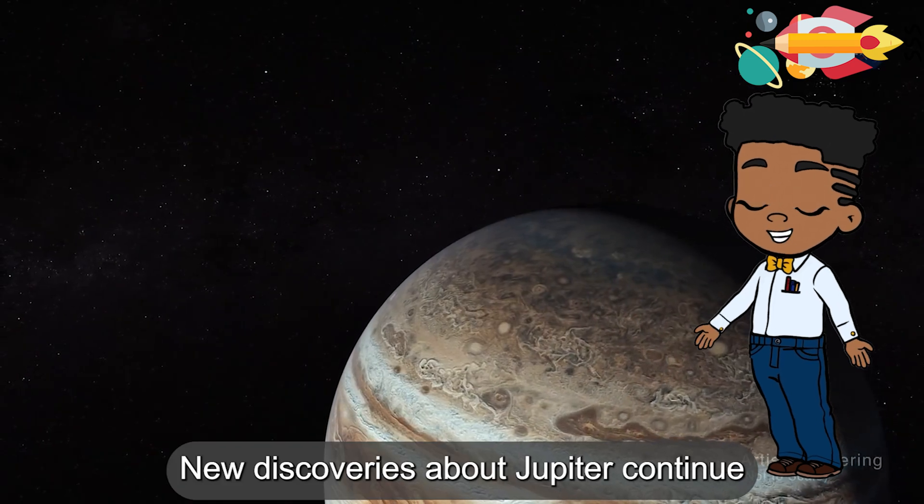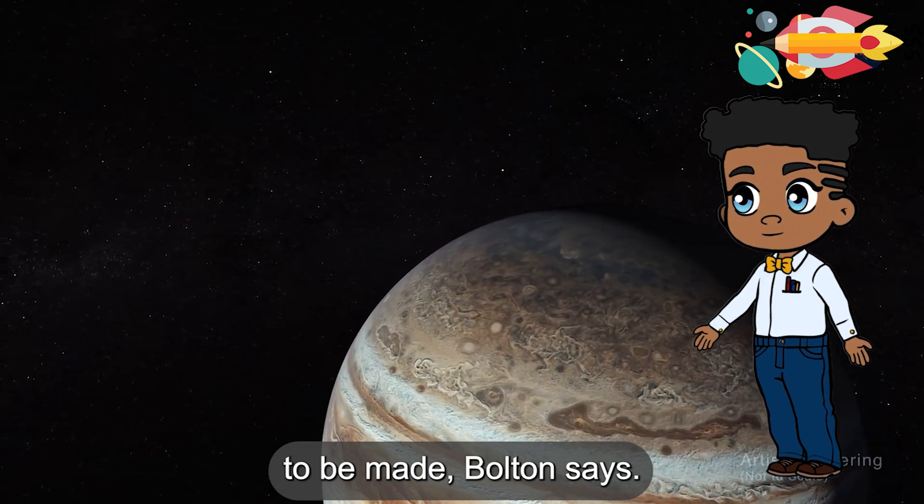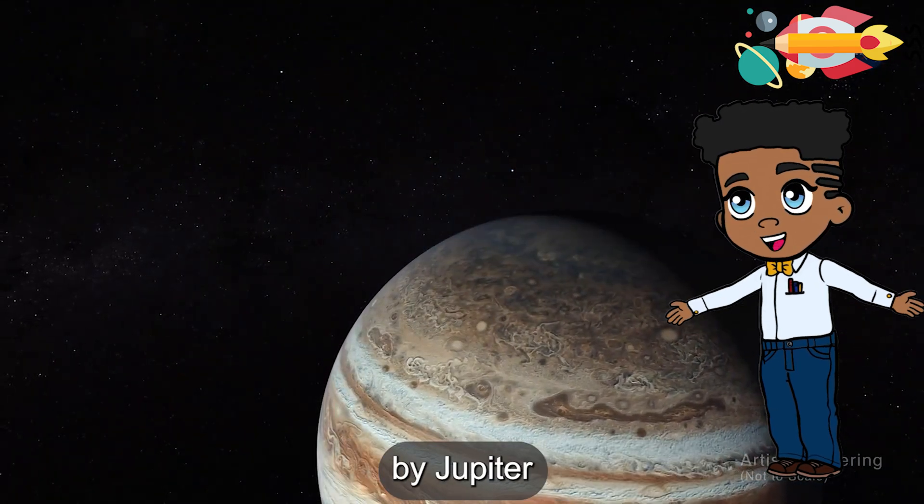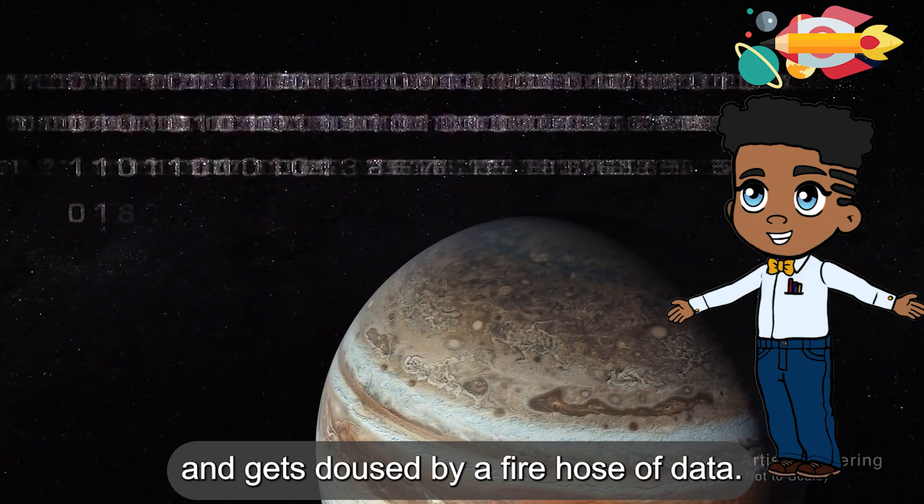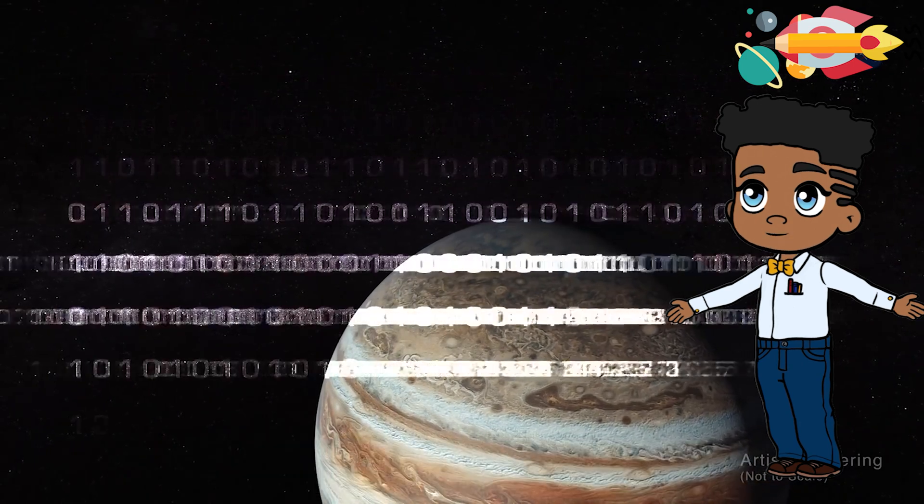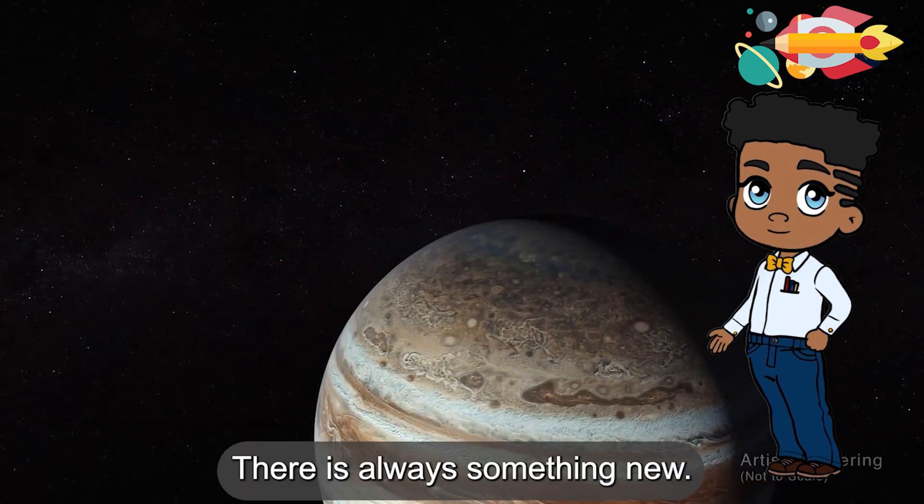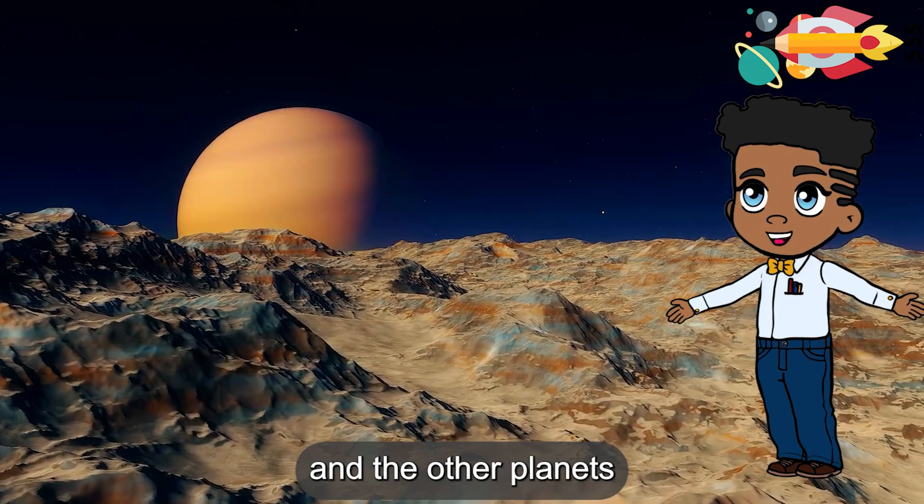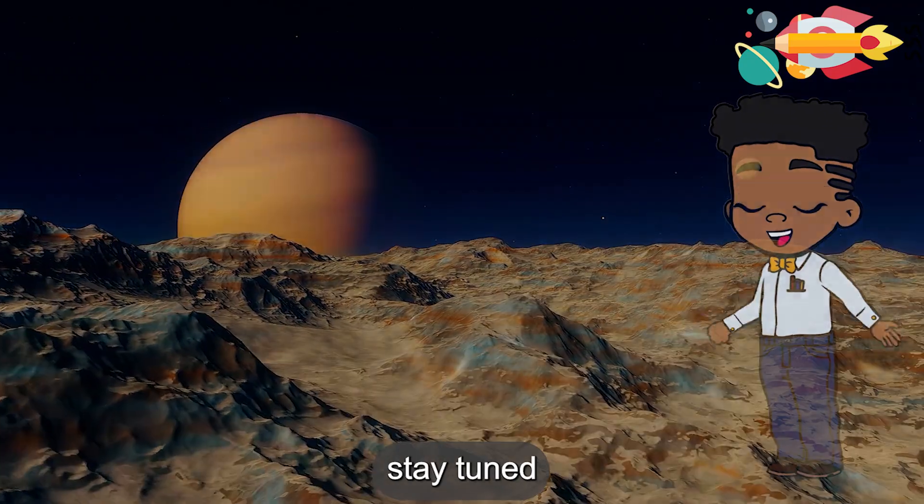New discoveries about Jupiter continue to be made. Bolton says, Every 53 days, Juno goes soaring by Jupiter and gets doused by a fire hose of data. There is always something new. For more discoveries from Jupiter and the other planets of our solar system, stay tuned.